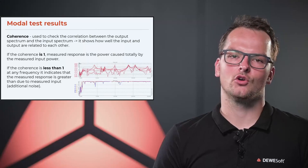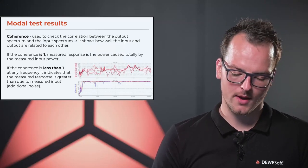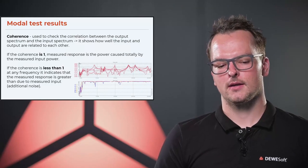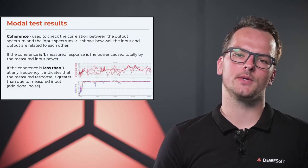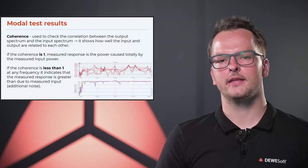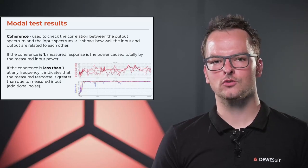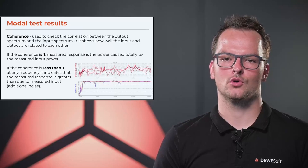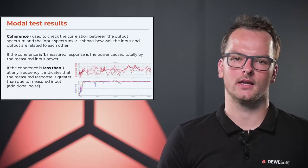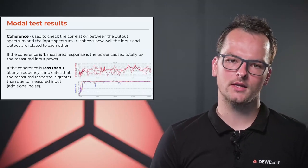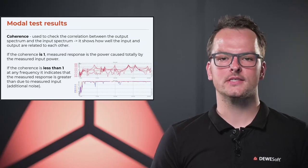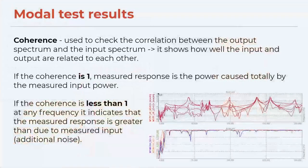The second function is the coherence, which is an important parameter for validating whether our measurement was successful. The coherence is a number between zero and one, and it tells us how well our output spectrum is related to the input spectrum. If the coherence is one, the measured response is caused totally by the input power. If the coherence is less than one, it may indicate some noise in the measurement, or that we need to repeat the measurement to excite the missing frequencies.